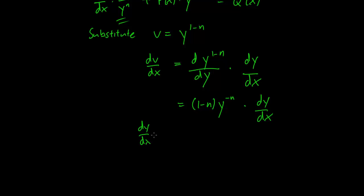dy/dx times 1 over y to the n equals dv/dx times 1 over 1 minus n.